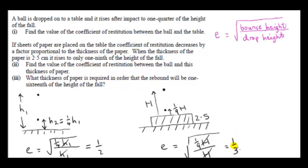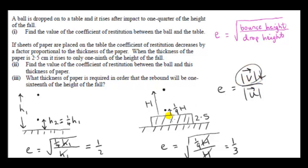So the coefficient of restitution has decreased. That makes sense because the ball only reaches one-ninth of the original height, whereas previously it reached one-quarter. In the second case, the speed immediately after impact is less compared to the speed just before impact. We know that e is the speed immediately after impact divided by the speed immediately before, so v has gone down in this second situation.